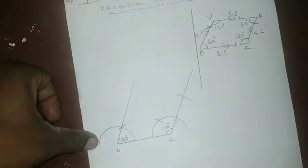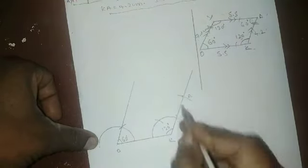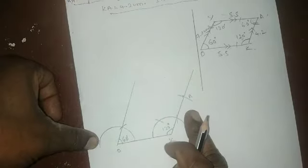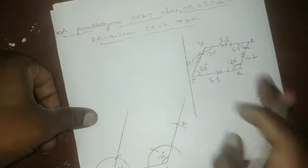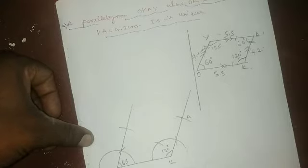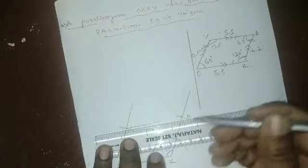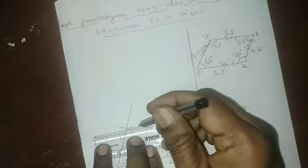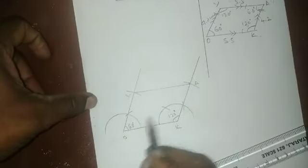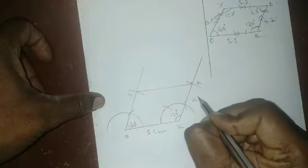Draw from K and cut. This point is A, at 4.2 cm. Now you have to make point Y. Since opposite sides are equal, from O cut an arc, and join these two points. This point is Y and we have constructed a parallelogram. This side is 5.5 cm and this side is 4.2 cm.